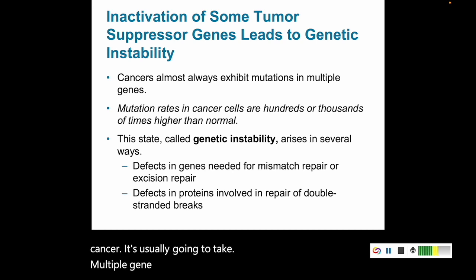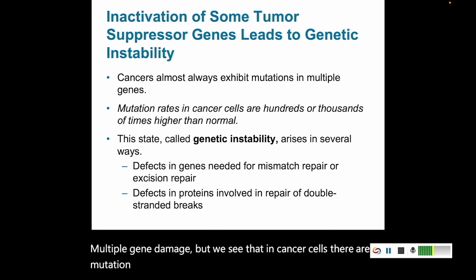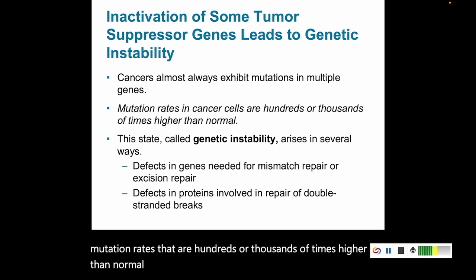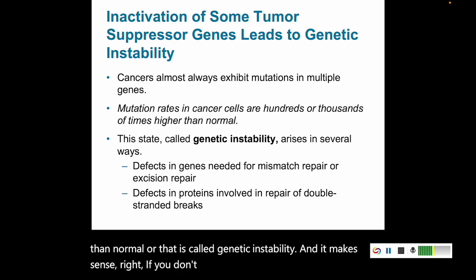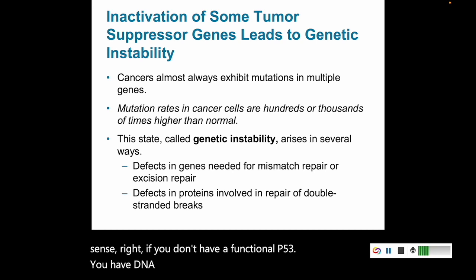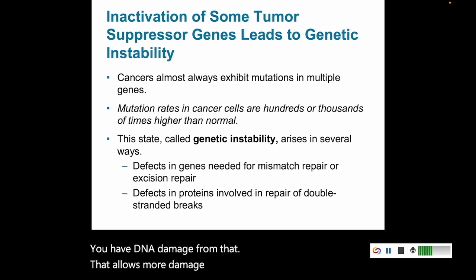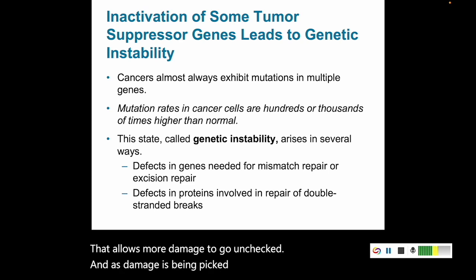In cancer cells, there are mutation rates that are hundreds or thousands of times higher than normal — that is called genetic instability. It makes sense: if you don't have a functional P53, you have DNA damage from that, which allows more damage to go unchecked. And as damage is being picked up, it's not being corrected, so it just keeps piling on.